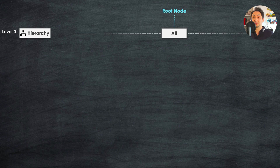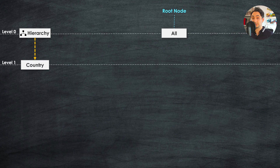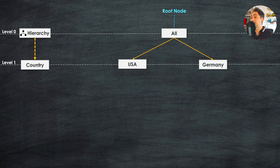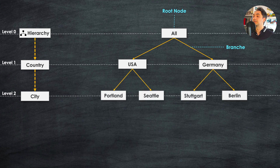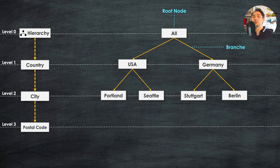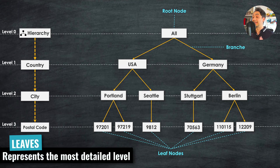In hierarchies we have different levels, starting with the top node called the root node, which represents the highest level of aggregation. Going to the next level we have 'country', showing values like USA and Germany. The links between nodes are called branches. The next level is 'city', where USA has Portland and Seattle, and Germany has Stuttgart and Berlin. The final level is 'postal code', which splits the structure into more detail. Since postal codes have no children, we call them leaf nodes — they represent the most detailed level of data.